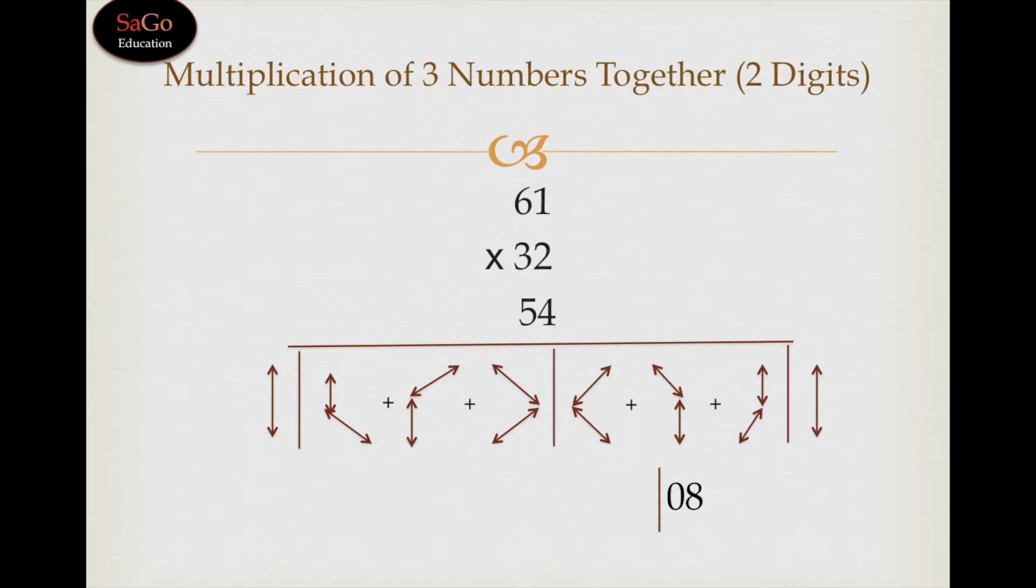Now there are three patterns in this box. So as per the pattern, 1 × 2 × 5 plus 6 × 2 × 4 plus 1 × 3 × 4 makes 70. We will write 70. Put a slash.